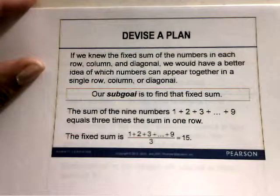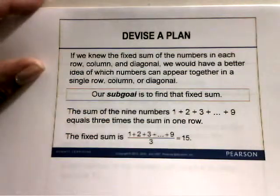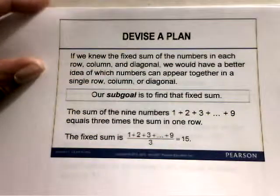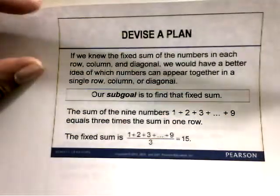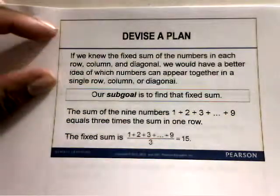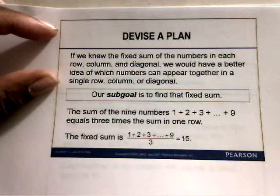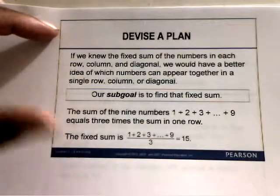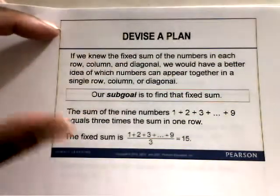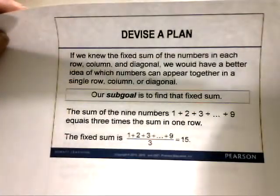The sum of the 9 numbers from 1 through 9 will equal 3 times the sum in one row. So add 1 through 9, you get 45. Divide that by 3, you get 15. So the fixed sum in each row, column, and diagonal would be 15.